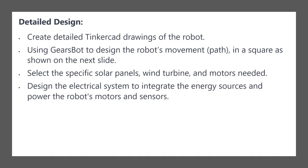For the detail design, we can use TinkerCad to do the drawings of the robot, and GearsBot to design the robot's movement or path. The next slide shows block coding for the robot to move in a square. We then select the specific solar panels, wind turbine, and motor needed, and design the electrical system to integrate the energy sources to power the robot's motor and sensors.